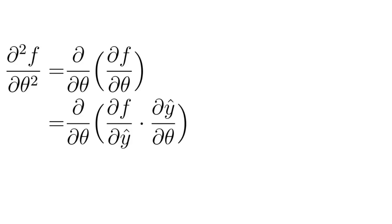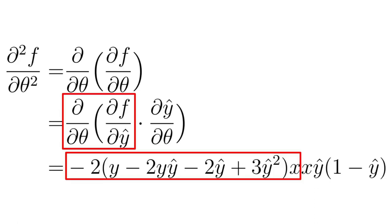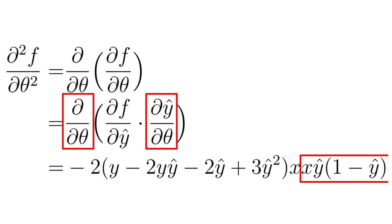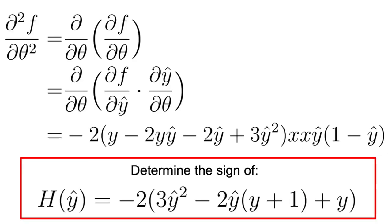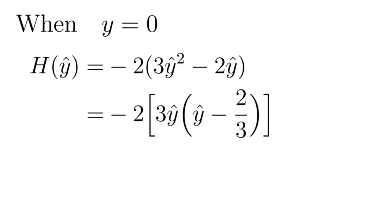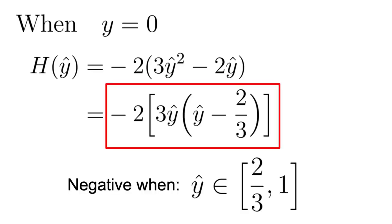When we compute the second derivative, we again apply the chain rule and obtain the following for the first term and again x·ŷ(1 - ŷ) from the sigmoid function derivative. Now, x squared and ŷ(1 - ŷ) are always positive, so we are left with determining the sign of the first term. To do this, we can take advantage of the fact that y has only two values, 0 and 1. When y equals 0, we have the following. Remember that ŷ is also between 0 and 1, so here we have two cases. When ŷ lies in the range [0, 2/3], the function H(ŷ) is greater or equal than 0. And when ŷ lies between 2/3 and 1, the function H(ŷ) is less than 0. This shows that the function is not convex for y equals 0.